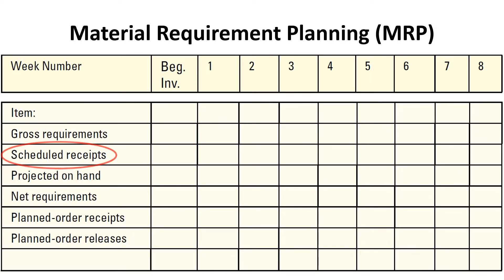Scheduled receipts are orders that have been placed and are scheduled to arrive from vendors or elsewhere in the pipeline by the beginning of a period. Projected on hand is the expected amount of inventory that will be on hand at the beginning of each time period, or the scheduled receipts plus available inventory from the last period.